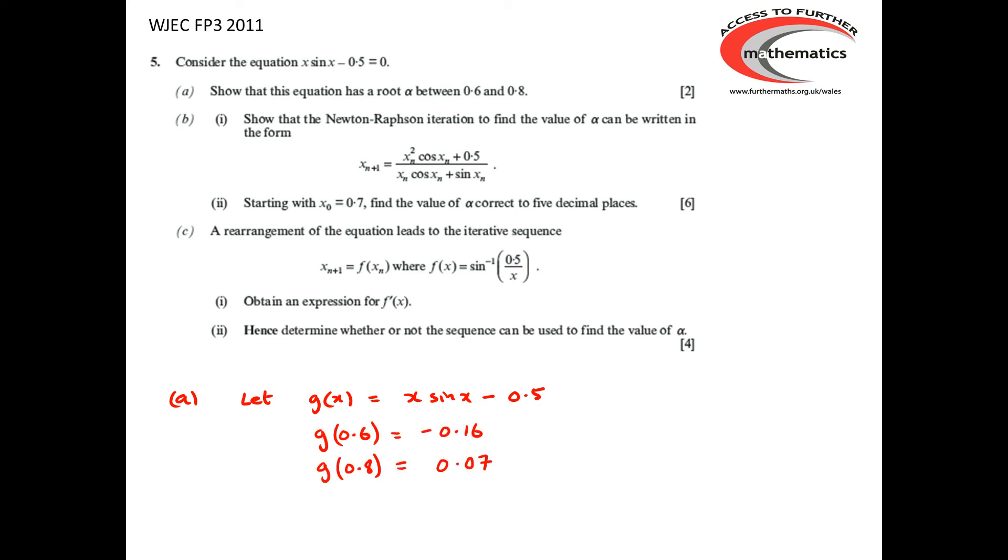then we've got g(0.6) must be -0.16 and g(0.8) is 0.07. So those values simply come from the calculator. Remember of course that we're using radians. Well we have a sign change. We've got g(0.6) is negative, g(0.8) is positive. This is a continuous function, no sudden jumps in that function. So we've got a sign change in a continuous function, so there must be a root between 0.6 and 0.8.